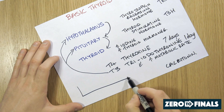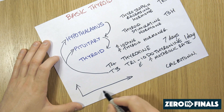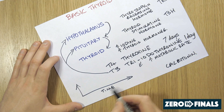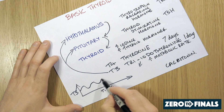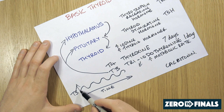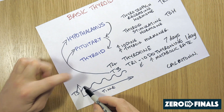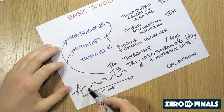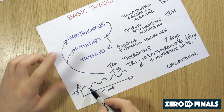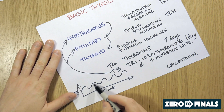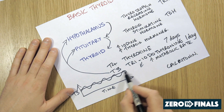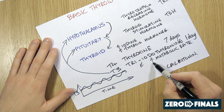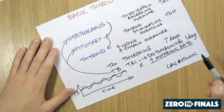So what you essentially get is, over time, the T3 level will oscillate. As it gets higher, it'll feed back that there's too much, and it'll drop. As it gets too low, it'll feed back that there's not enough, and it'll go up. But it stays fairly constant over time, and that's how your body controls the metabolic rate.